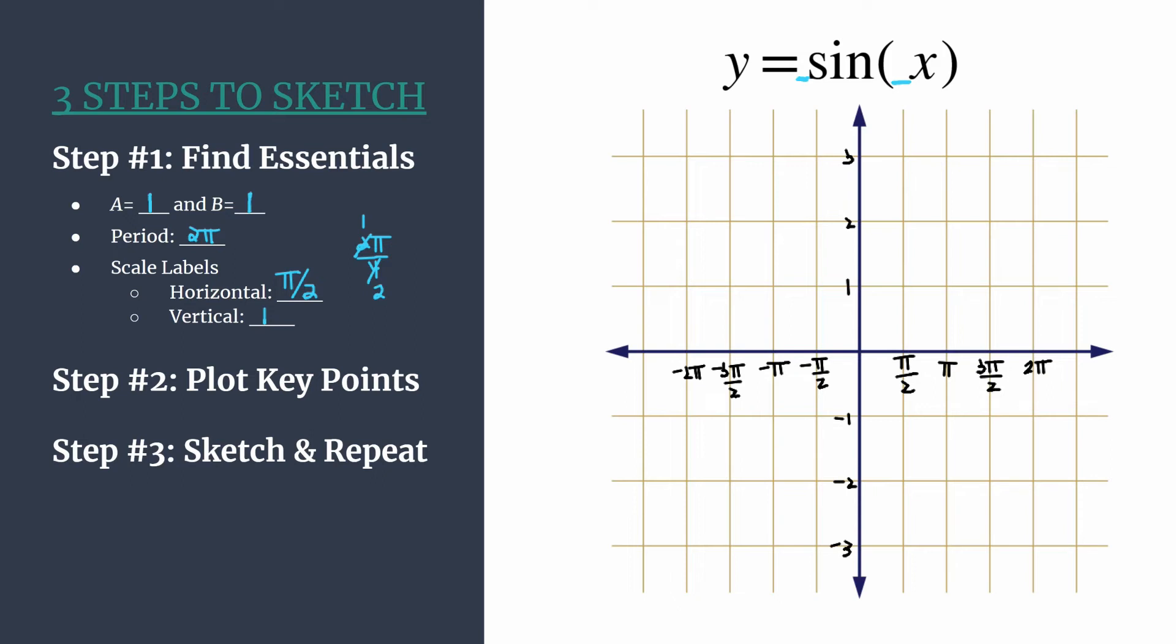Now we're ready to move on to step two: plot key points. We know our pattern for an unreflected sine should be zero, max, zero, min. Once you know that and you have your axes labeled, it's very easy to get your graph of sine and move on to repeat. We know our first point should start at the origin, so we put a point at zero, zero.